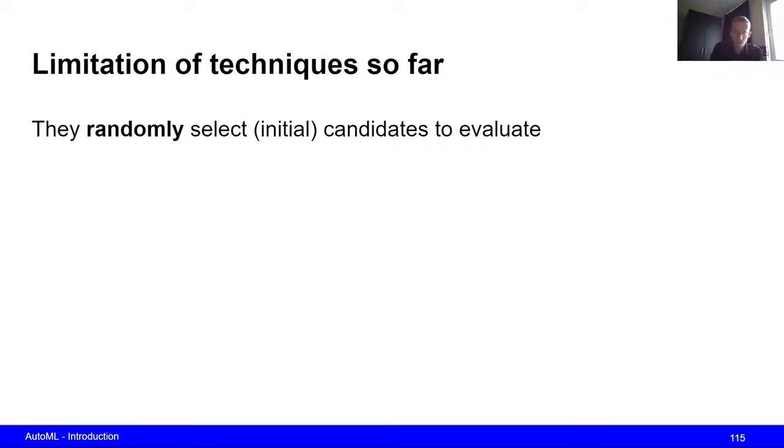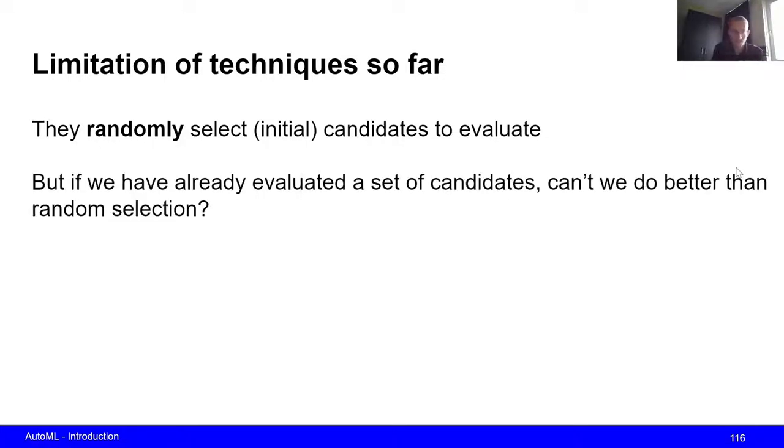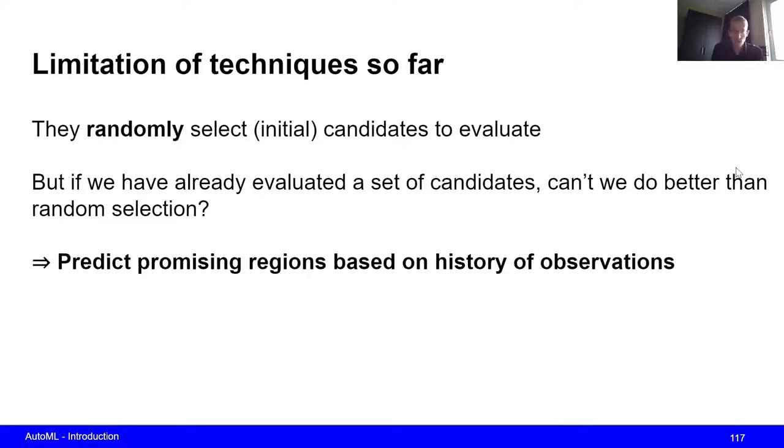Now you may say, well, if we have already evaluated a certain number of hyperparameter configurations, then isn't there something better than just randomly selecting them? So for example, we could fit a model to our previous observations and then use this model to predict the most promising regions or the most promising hyperparameter configurations based on our history of observations.